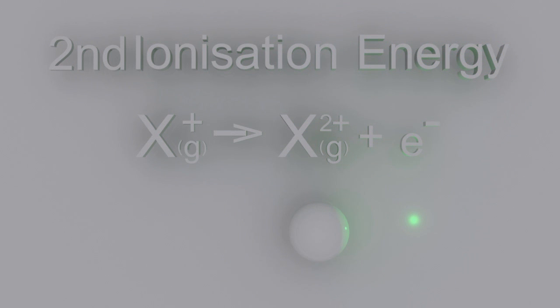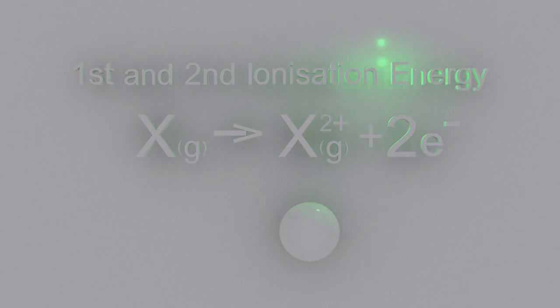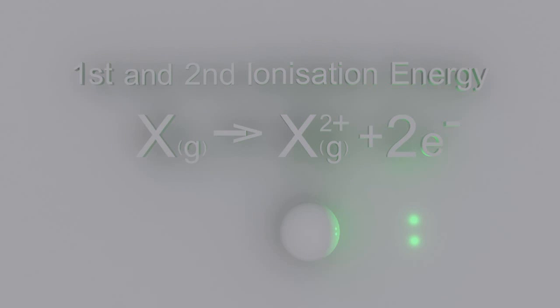And just FYI, see how the ion gets smaller? That's not to be confused with the first and the second ionization energy, which is removing two electrons from a gaseous atom.